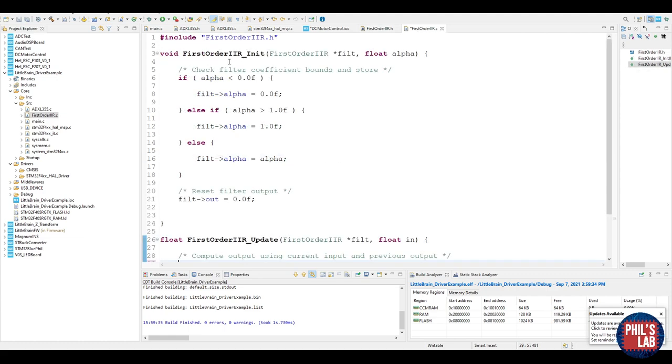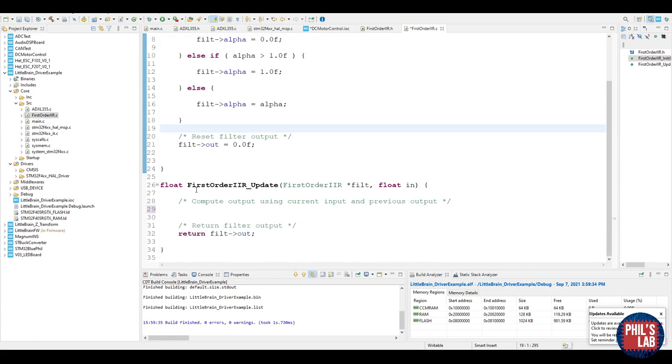Let's go over to the C file and see how these functions are implemented. The first order IIR init function just checks if the filter coefficients are bounded correctly and then I store them in my struct. So I check if it's below 0, I set it to 0. If it's above 1, I set it to 1. Otherwise I simply just store it. Then I reset my filter output and that's about it.